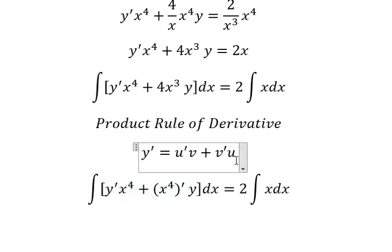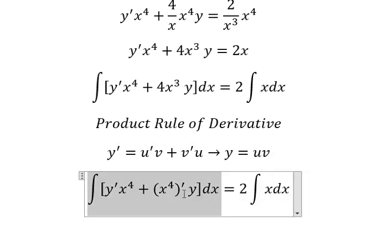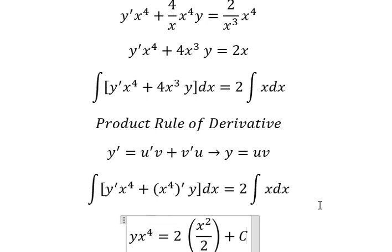So if we do this integration, we have y equals uv. The integration of this one, we have yx to the power of 4 equals x² over 2, and we add C.